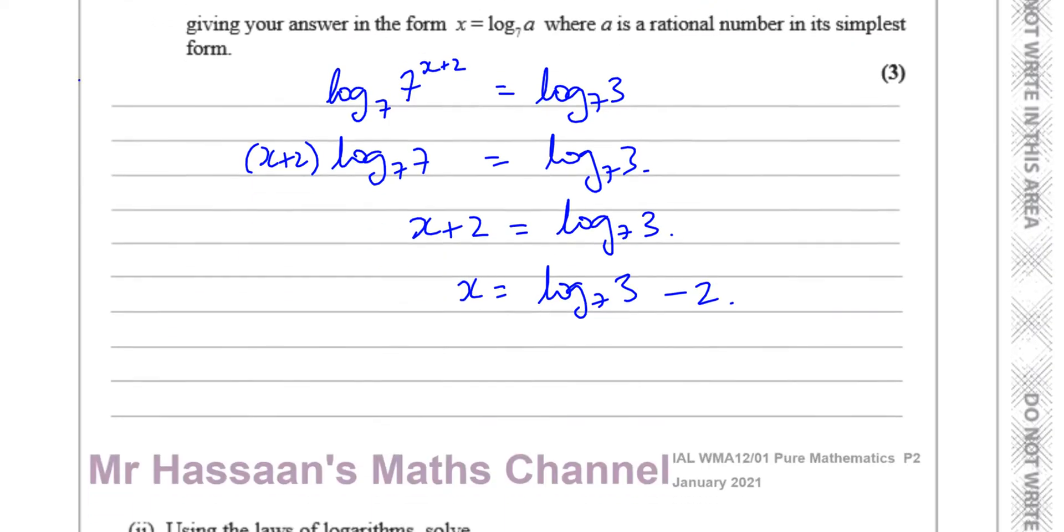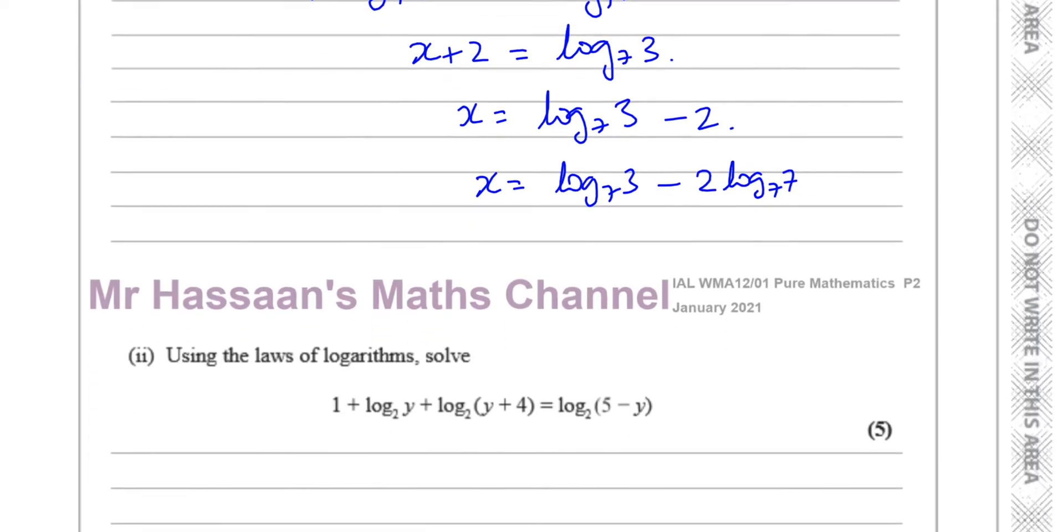So I've got to think of a way of expressing this 2 as in terms of log to the base 7 of something. Now, we know that log, what we just got rid of there, is going to help us here. In fact, we should have kept it, but there's no problem. We're going to have log to the base 7, 3 minus 2 times log to the base 7, 7. These two are the same, because 2 times log to the base 7, 7 is actually equal to 2 because this is equal to 1. But how does this help us?